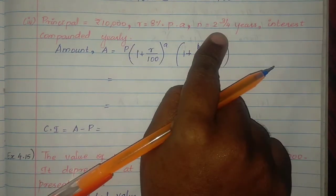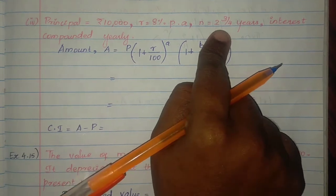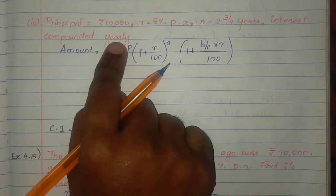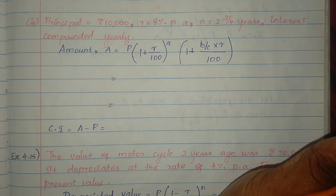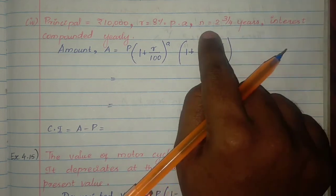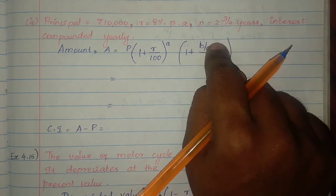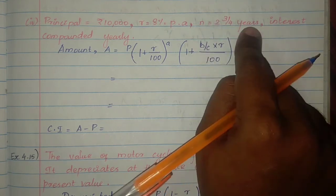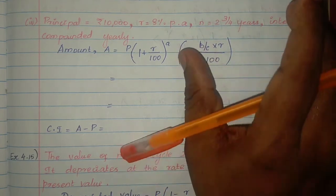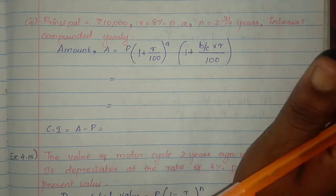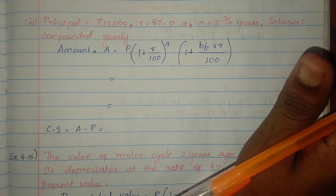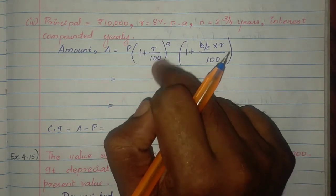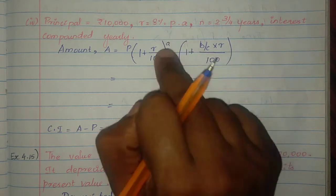Next: Rate is 8% per annum, number of years is 2 and 3/4 years, compounded yearly. Since it's a mixed fraction, each year the principal changes. The formula for a mixed fraction number of years is P × (1 + R/100)^A × (1 + B/C × R/100).